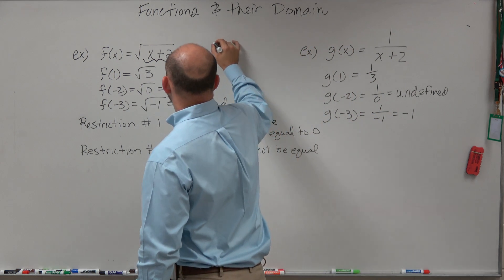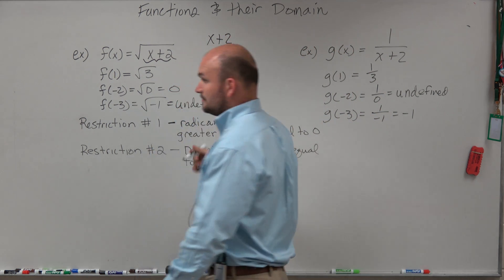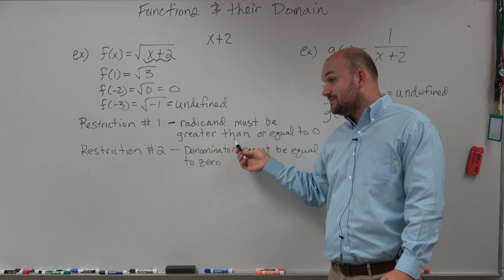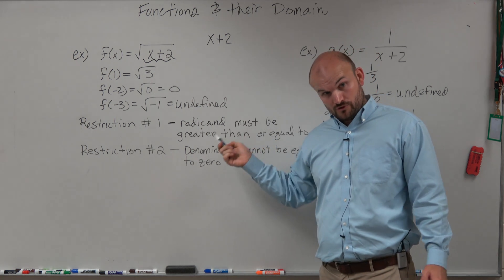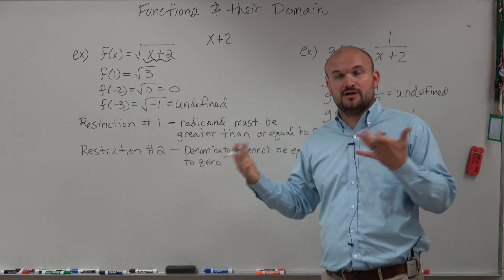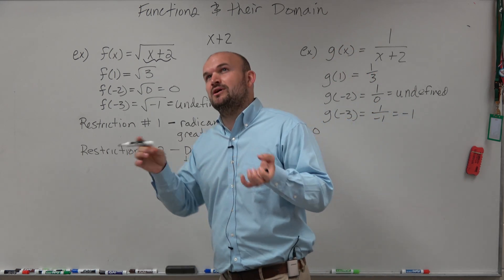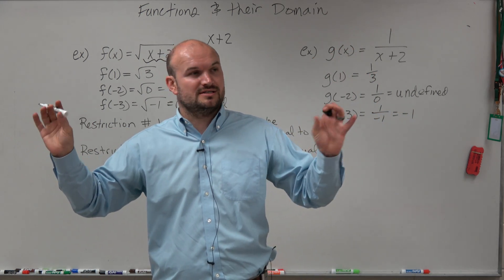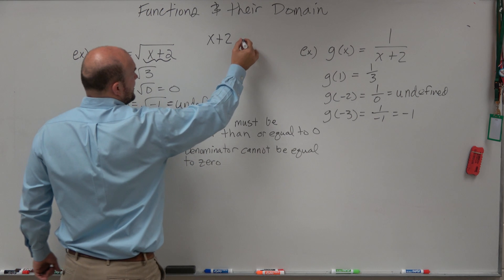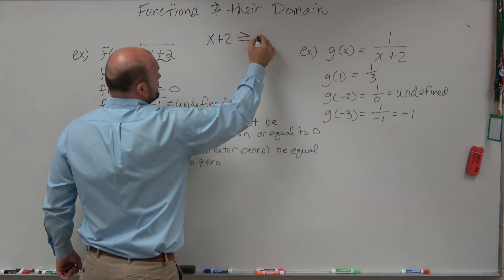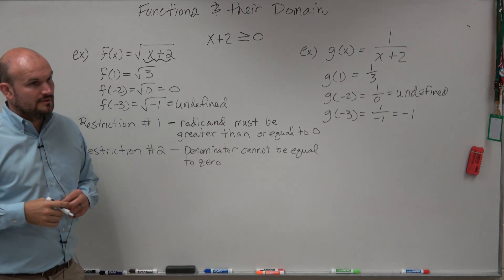So we know our radicand, x plus 2, has to be greater than or equal to... greater than or equal to, so we've got to think. Going back to Algebra 1, doing those one variable inequalities on a number line. Oh yeah, greater than or equal to 0, right?